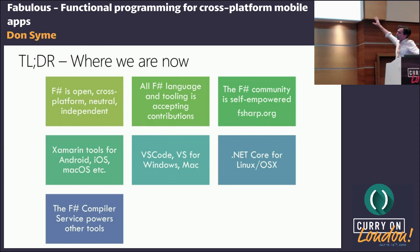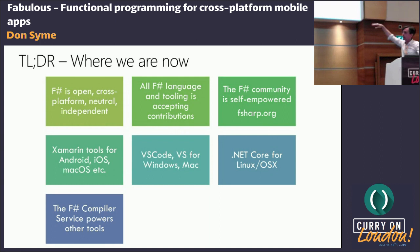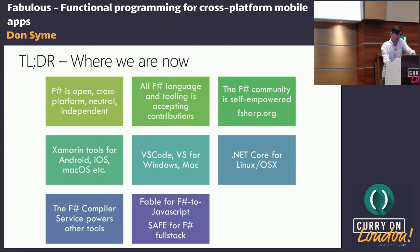Underneath it all, one of the reasons we're able to deliver F-Sharp tooling right across this spectrum is that the F-Sharp compiler is built as a component — the F-Sharp compiler service component, a single library, a single DLL in the .NET world — which can be used in all these different settings and cross-compiled to JavaScript as well. That component powers both the compiler, F-Sharp interactive, the REPL, the tooling, and the REPLs in the browser that run on the client side or server side.